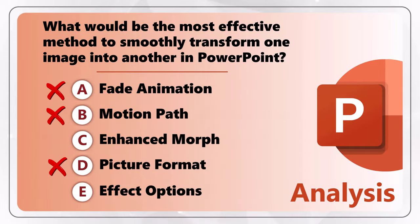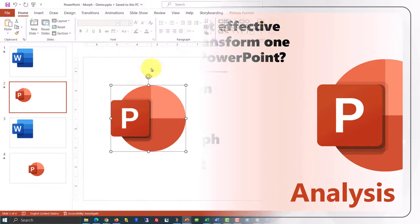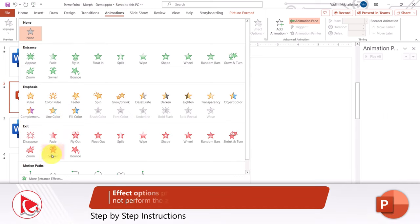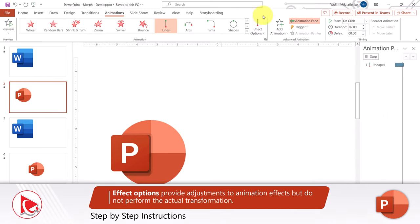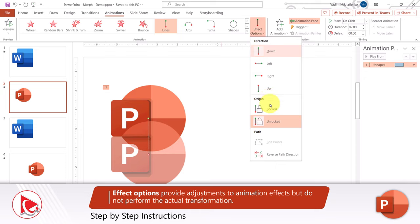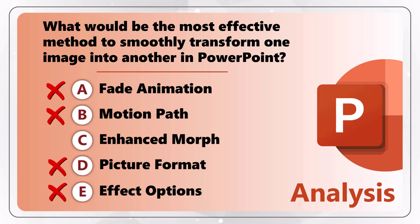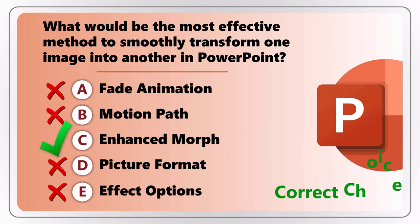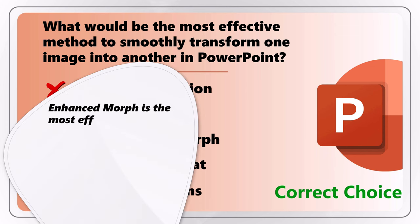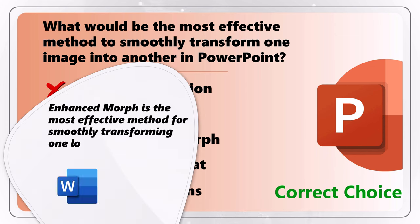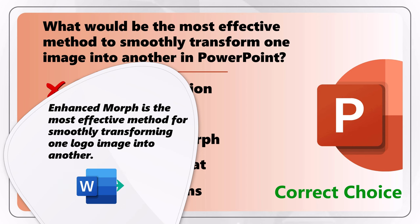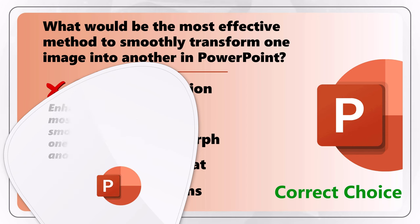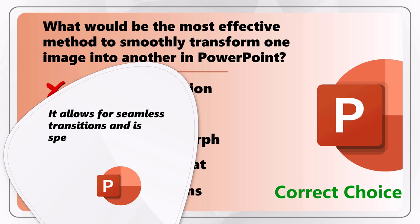Choice E, effect options, is also incorrect. Effect options provides adjustments to animation effects, but it does not perform any actual transformations. Which leads us to the correct Choice C: Enhanced Morph feature. Enhanced Morph is the most effective method to smoothly transform one logo image into another inside PowerPoint. This allows for seamless transitions, and it is specifically designed for this purpose.